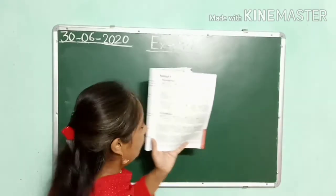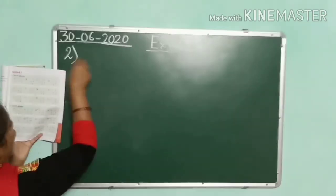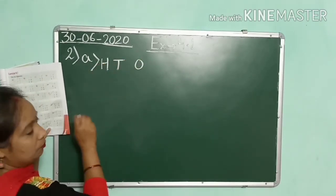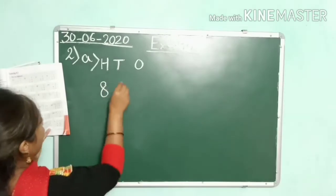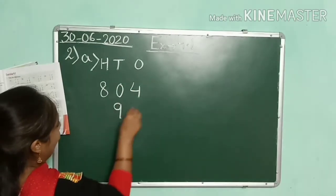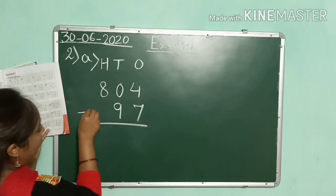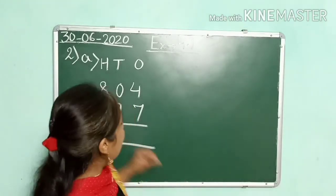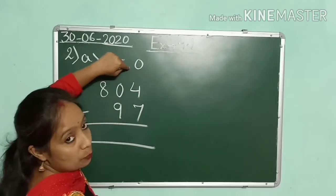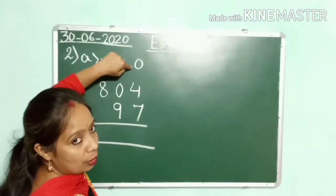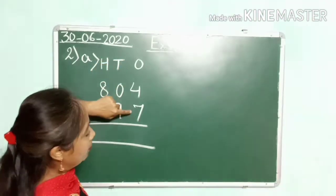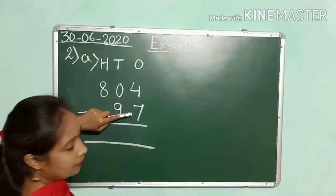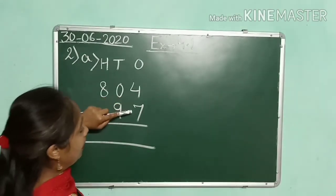Here in question 2A, we have the 1s, 10s, and 100s columns. The numbers are 804 and we have to subtract 97. Now children, we begin the subtraction from the 1s column, as you know. We have to subtract 4 and 7, but 4 is smaller than 7, so we cannot subtract 7 from 4.